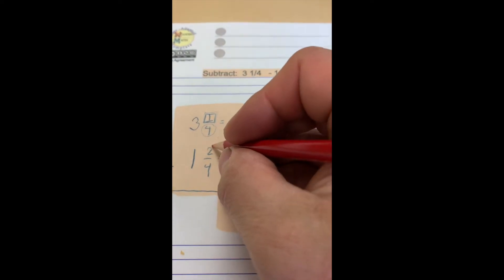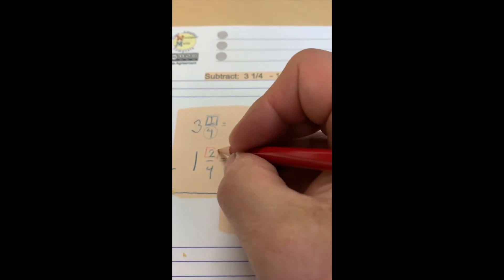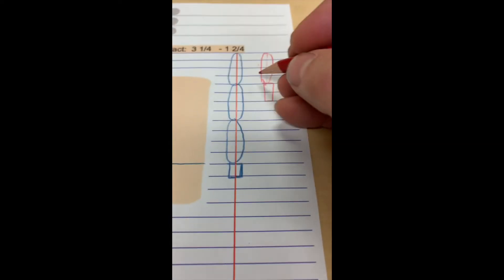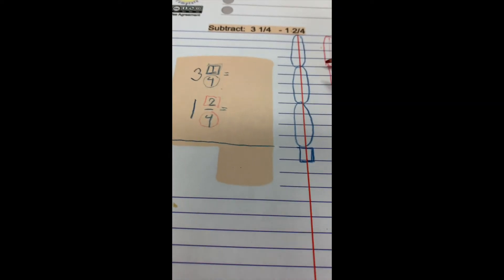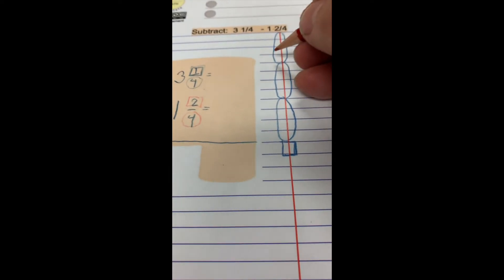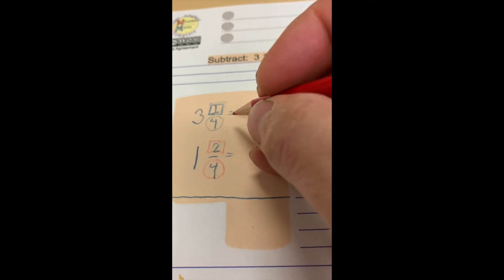So again, I'm putting a box around these. These are parts. That's how much it takes to make a whole thing. What's going to have to happen is I can't take 2/4 away from 1/4, so I'm going to have to regroup.